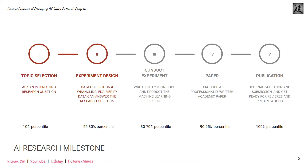First is the AI research milestone. On a high level, there are five milestones. The first step is topic selection — you want to make sure you ask an interesting question, and that question can be a research question. You also want to make sure this is something you're truly passionate about and find interesting. The second step is experiment design. Based on the research question, there may be questions about dataset collection, exploratory data analysis, or exploring a particular machine learning methodology. Experiment design is crucial because it lays the groundwork for the rest of the project.